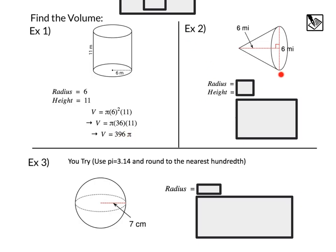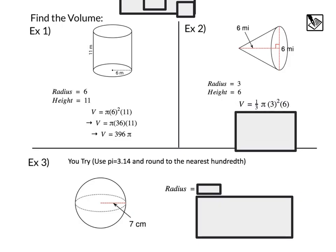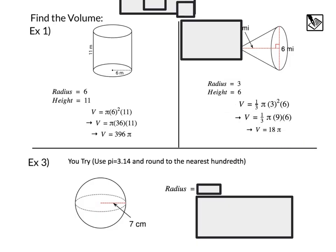Example two, we've got a cone. This time we have the diameter, which is 6, meaning our radius is going to be 3. We can also see the height is 6. Using our cone formula, one-third pi r squared h, that's going to be one-third pi times the radius squared times the height. Simplifying that out, 3 times 3 is 9. That one-third is dividing by 3, so one-third times 9 times 6 gives us our final volume of 18 pi.